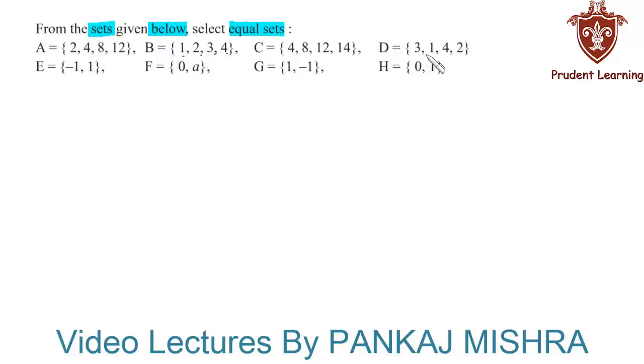are the same as that in set D. Although they are not written in the same order, they are still the same, so we will say that set B is equal to set D. Also, the elements of set E